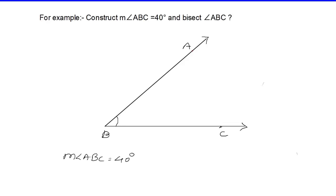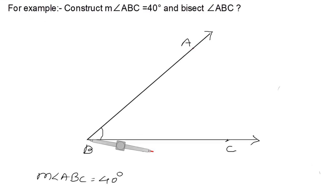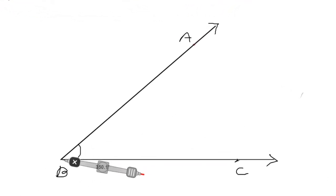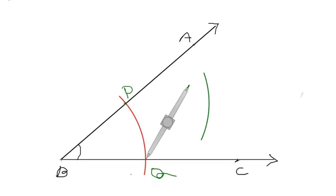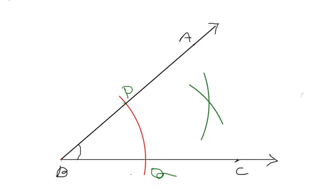To draw an Angle Bisector with a compass: place the point of the compass on point B with any convenient distance and draw an arc to cut ray BA and ray BC. Name the points of intersection as P and Q respectively. Now place the point of the compass at P and, taking a convenient distance, draw an arc inside the angle. Using the same distance, draw another arc inside the angle from point Q to cut the previous arc.